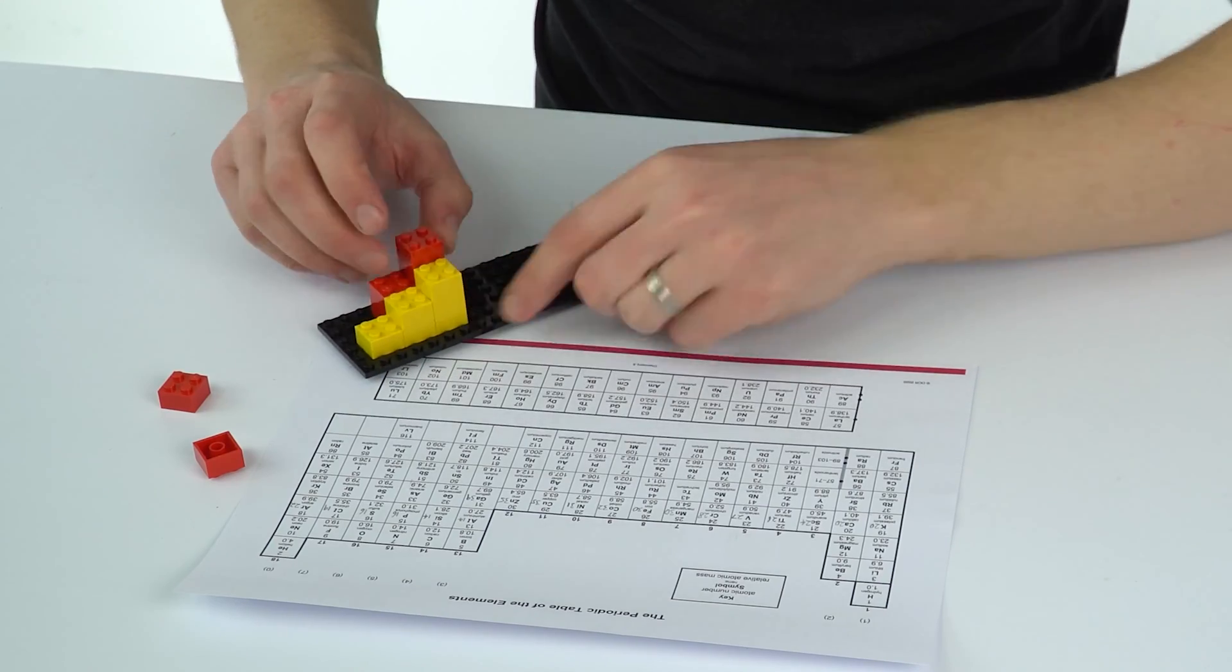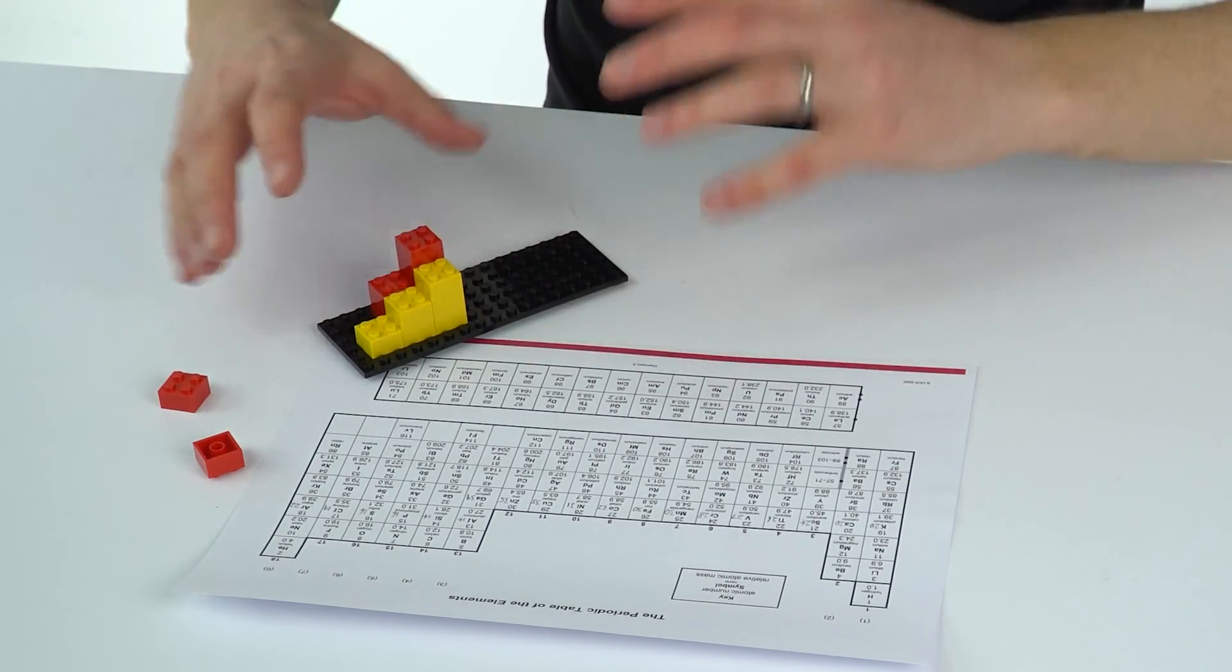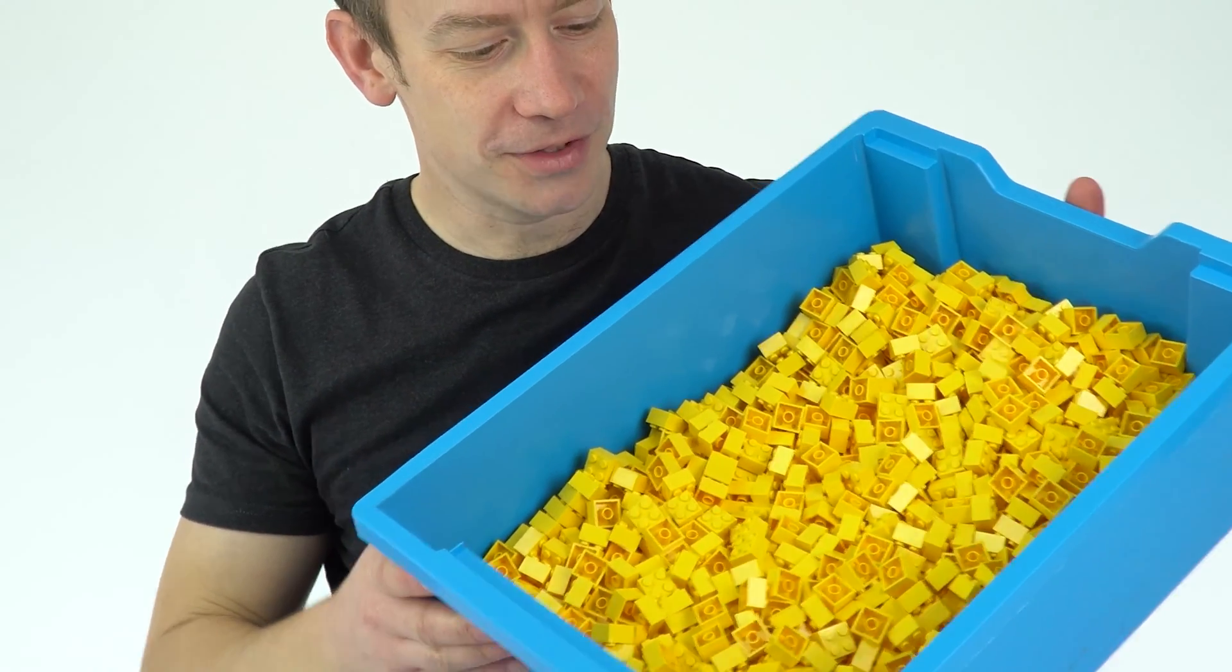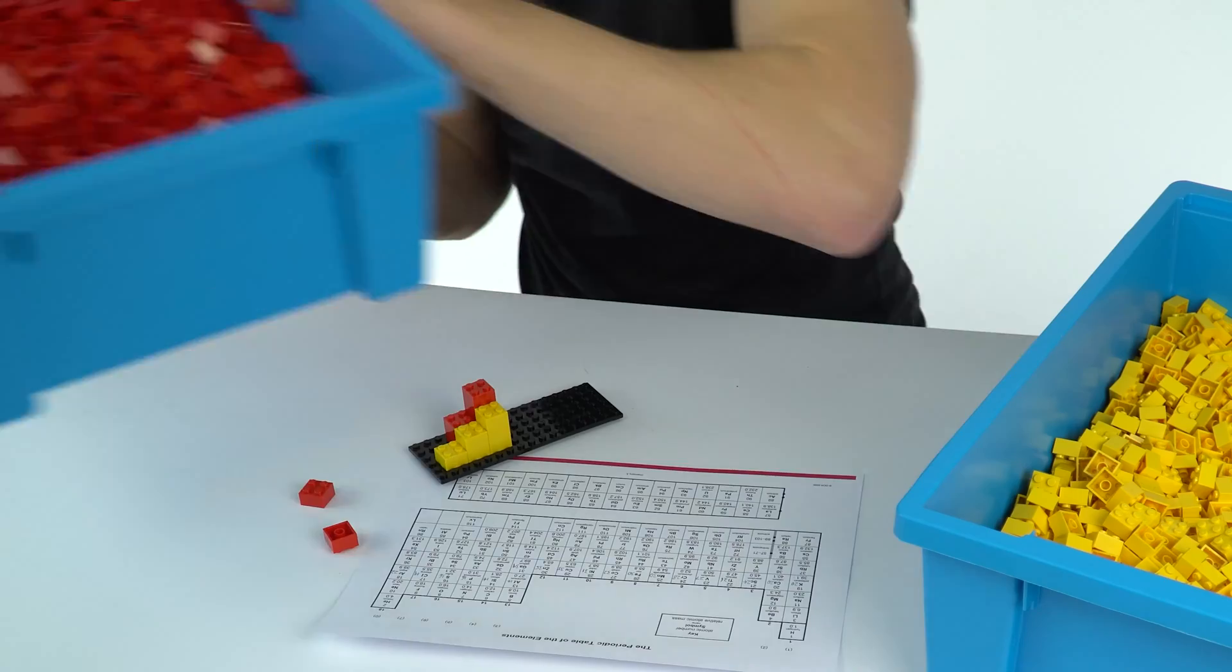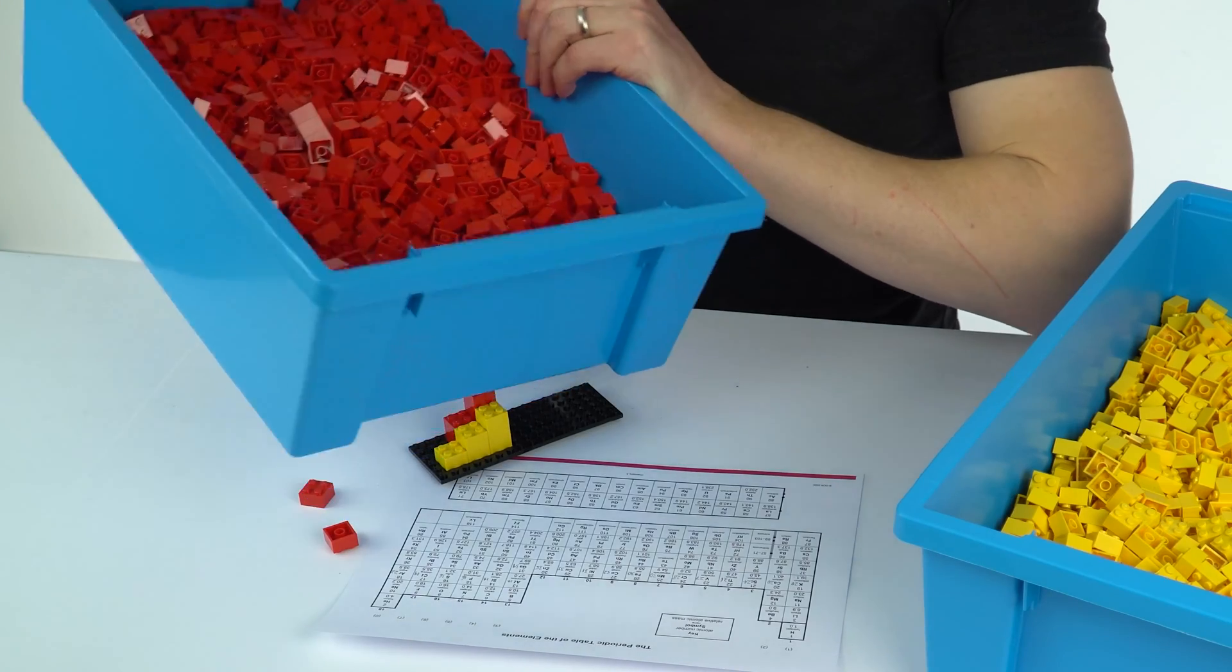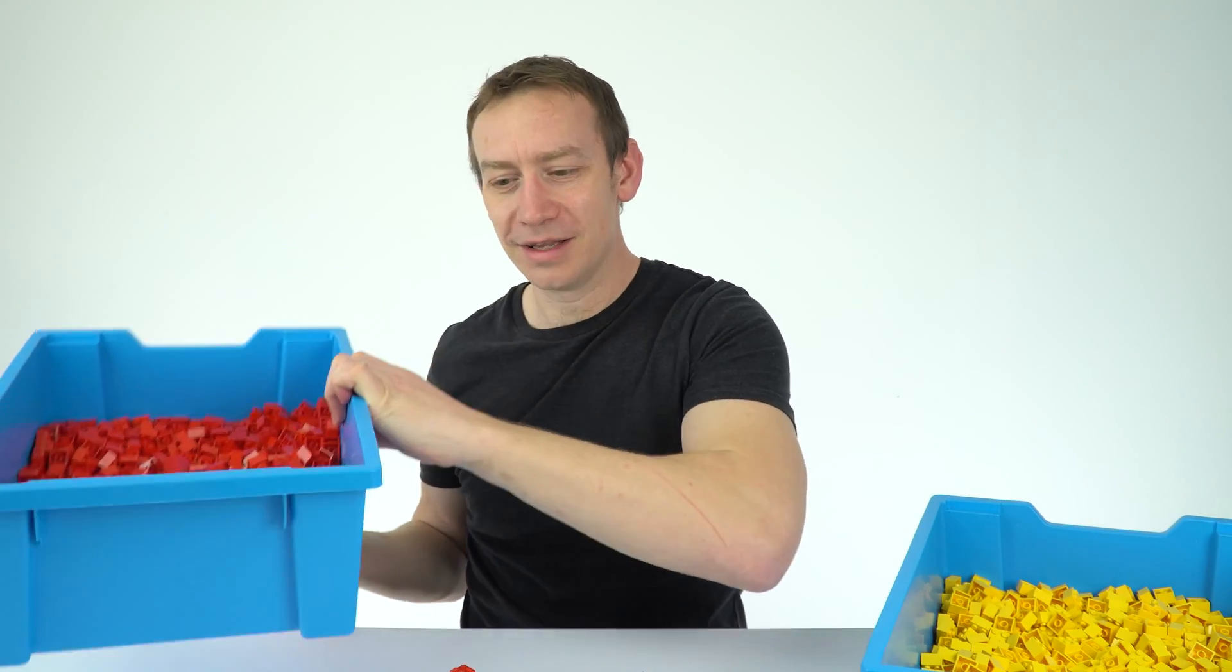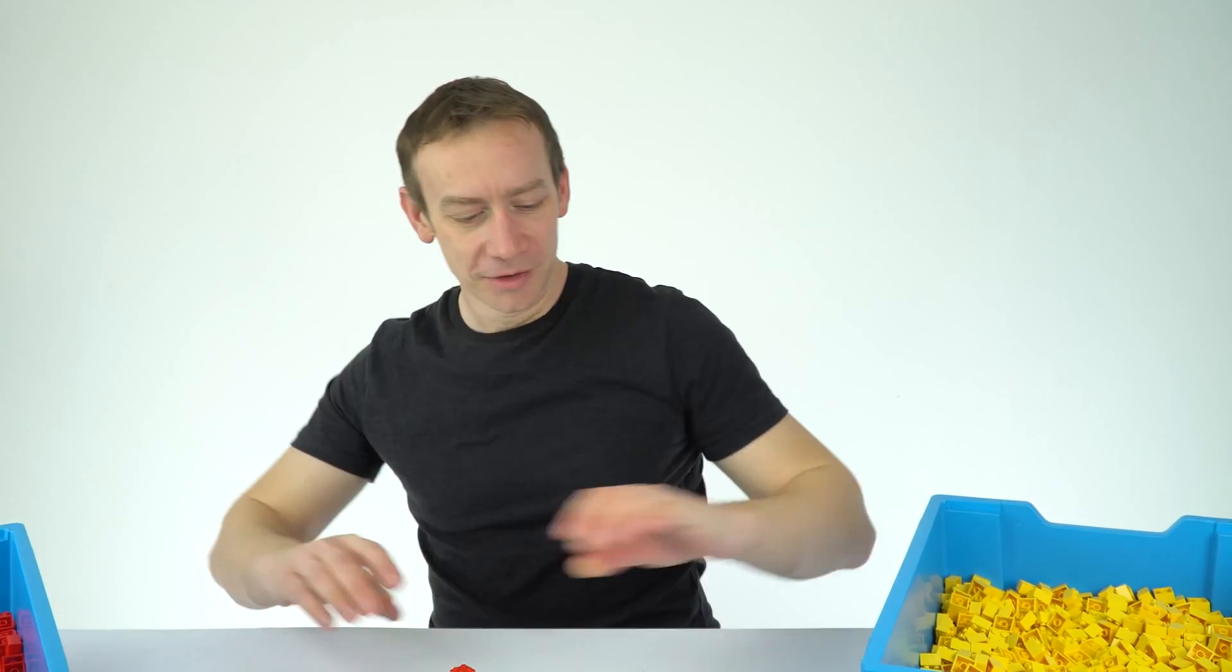There we go, so we can see we're starting to build, well it could be quite a large structure by the end of it. And to make it a large structure we need loads of LEGO. So what I have is this massive tray here full of protons and this other massive tray full of neutrons. There are hundreds, there's well over a couple of thousand bits of LEGO in these massive trays.